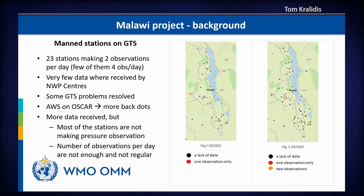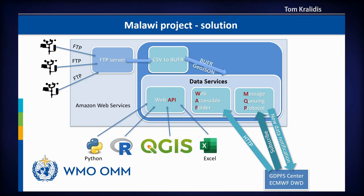One of these projects was working with Malawi — a demonstration project improving the observing network and exchange of data from those stations. We had a number of stations making only two or three observations per day, which wasn't suitable for modern weather forecasting. The Malawi project was born to improve the system. Making use of Amazon Web Services, data from weather stations came in via SFTP. From the FTP server, we had event-driven data transformation to the BUFR format, expected by weather forecasting centers. A BUFR-to-GeoJSON converter was also developed, accessible through Python, R, QGIS, and even Excel.